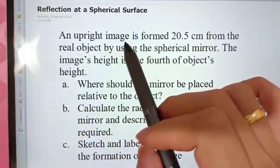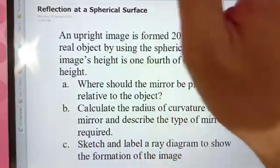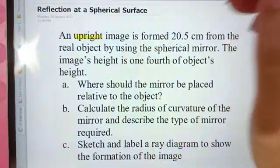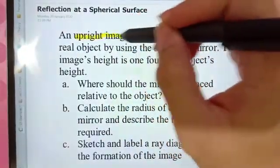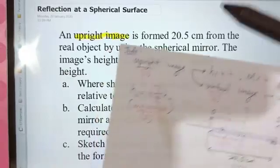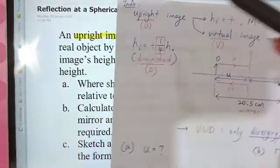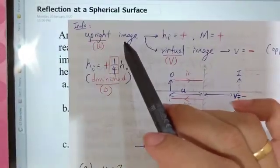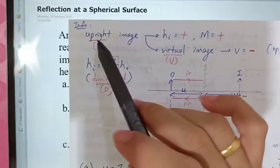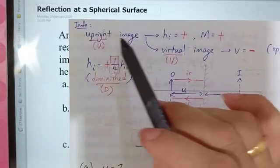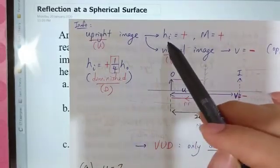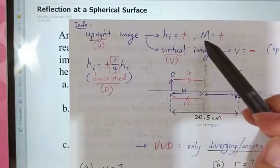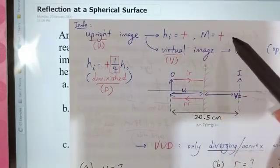Our image is upright. So meaning that we know one thing: upright image means hi is positive, magnification is positive.